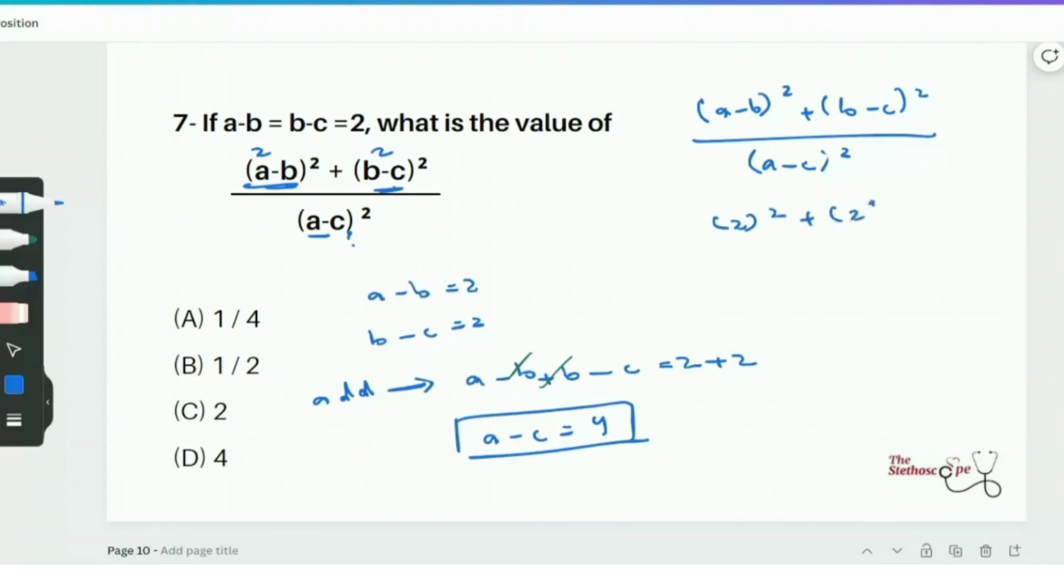So we have 2 whole square plus 2 whole square over 4 square. And if you simplify this, you'll get 4 plus 4 over 16. And that leads us to 8 over 16. And finally, we have 1 over 2 which is the option B among the answer choices. So yes, 1 over 2 option B is the correct answer for this question.